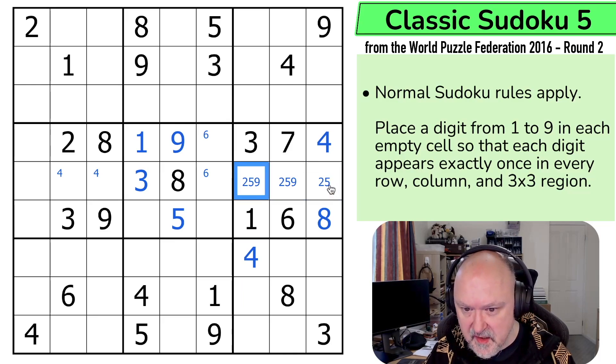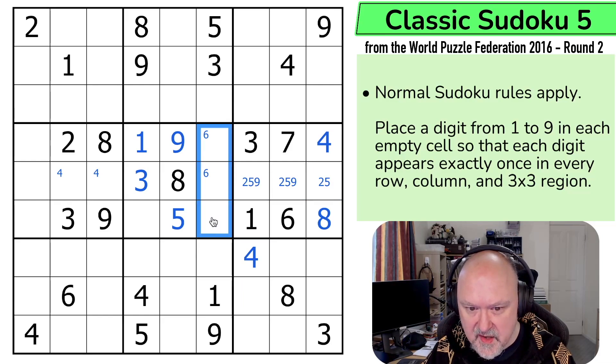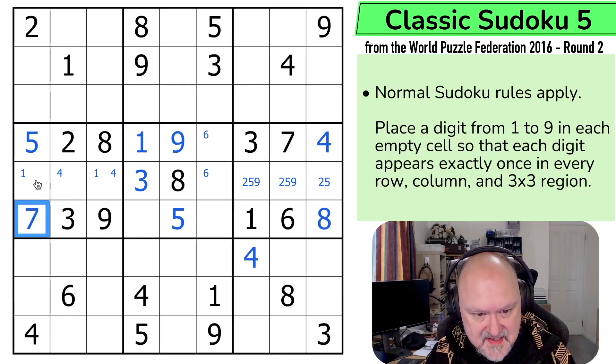The 1 is over here in one of those two. So what can this be? It can't be 1, 2, 3, 4, 5. This is 6 or 7, and it can't be a 6. That's a 7.